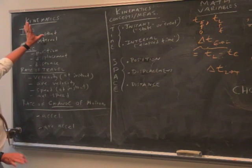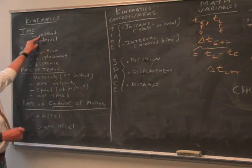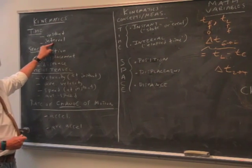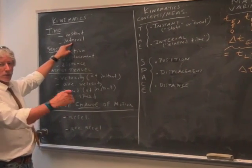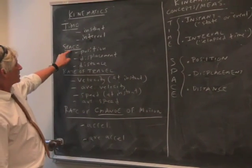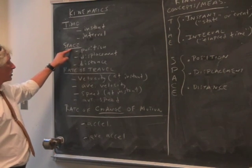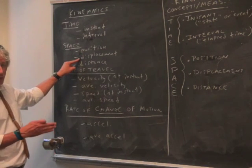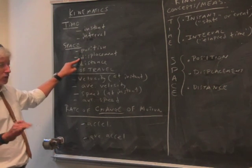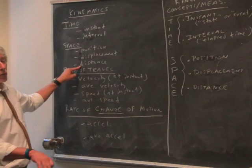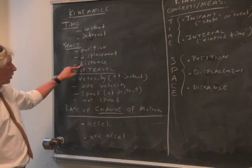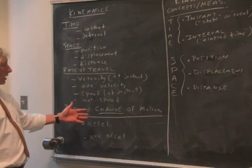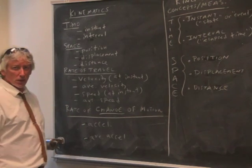Remember, we've got these main concepts in time. We've got instance of time, moment, also called states or events. Intervals of time, some duration, from now to now. Space, three concepts we have to distinguish. Position, location at an instant. Displacement, just the change in position no matter how you get there. And distance, how you got there, how far you actually walked. Rate of travel: velocity, average velocity, speed, average speed. Rate of change of motion: acceleration and average acceleration.